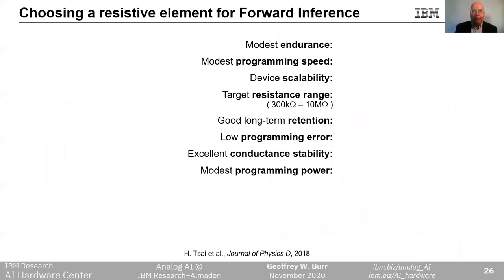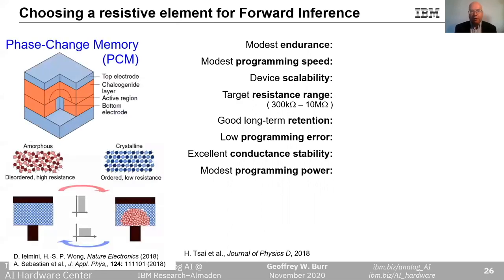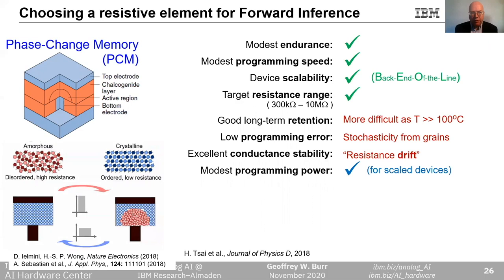So what would make a good resistive analog memory element? If we focus on forward inference, we need only modest endurance and programming speed. We want a device we can keep scaling down in size, with not too much read current so we have the right resistance range, and we want to program conductance states with modest power that then stays stable over time, even at elevated temperature. The device we have chosen to focus on for inference is phase change memory, or PCM. PCM depends on transitions between a highly resistive amorphous phase and a low-resistance crystalline phase induced by Joule heating, which we can control by the amplitude and shape of applied voltage pulses. PCM satisfies many of the necessary criteria — as a device in the back-end-of-line wiring, we can easily make small devices above the silicon.